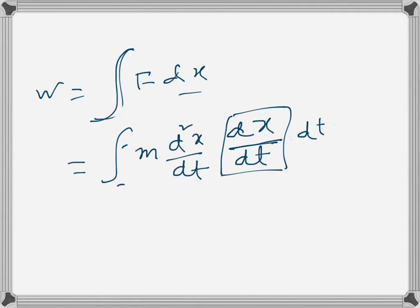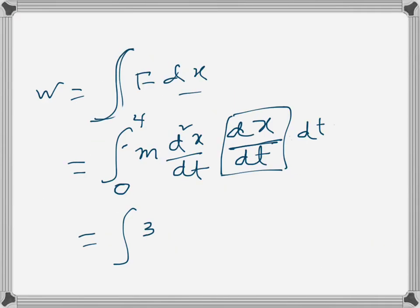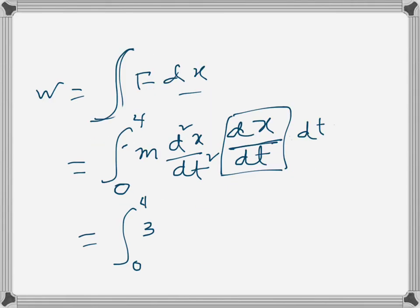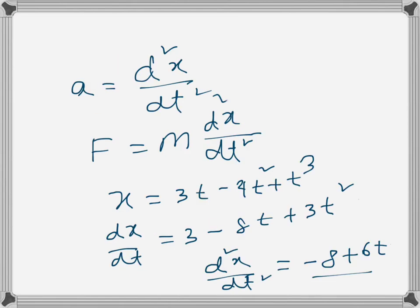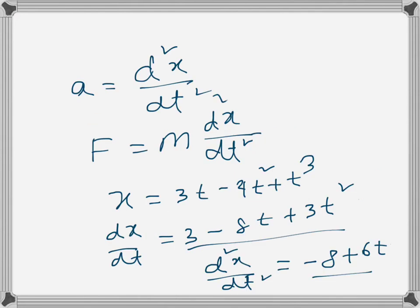Now I can write 0 to 4, and m we know is 3 kg, so that's 3 here. From 0 to 4, d squared x dt squared is minus 8 plus 6t, and then the first derivative is 3 minus 8t plus 3t squared, and then dt.